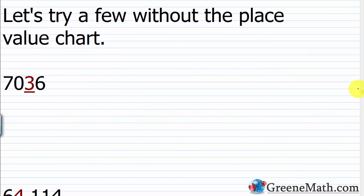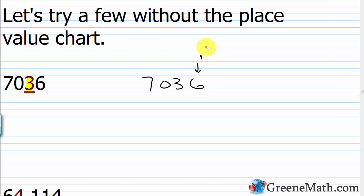Let's try a few without the place value chart using the multiply-by-10 trick. For 7,036 with the 3 underlined: start at the rightmost digit — that's the ones. Moving left and multiplying by 10 each time: tens, hundreds, thousands. The 3 is in the tens place.